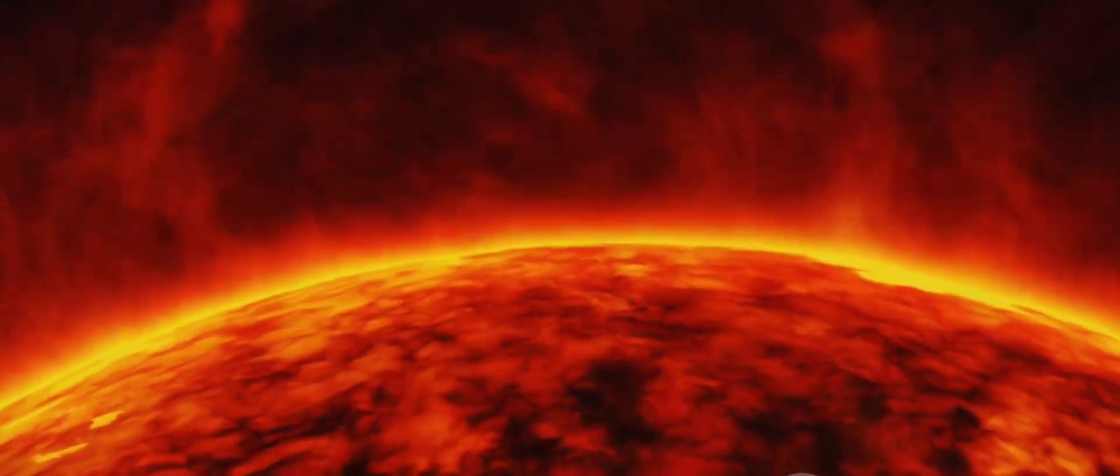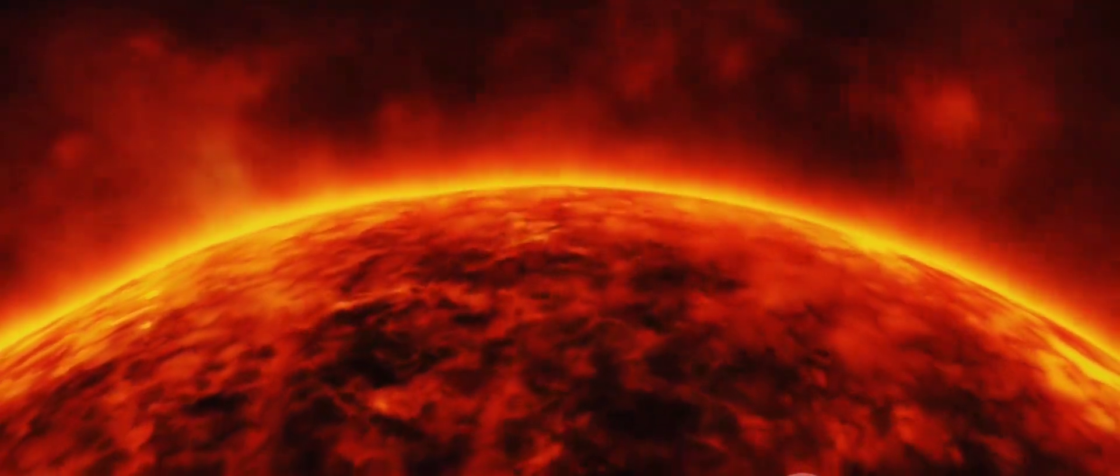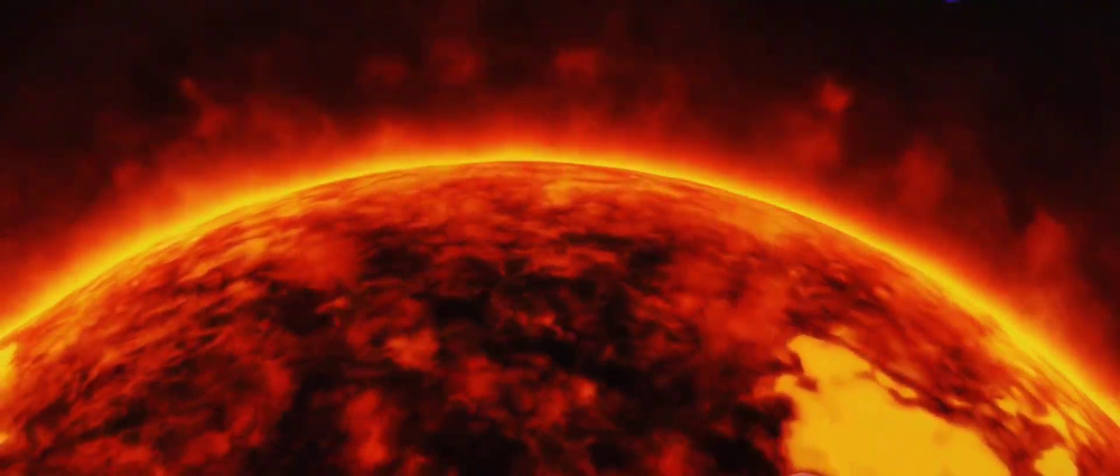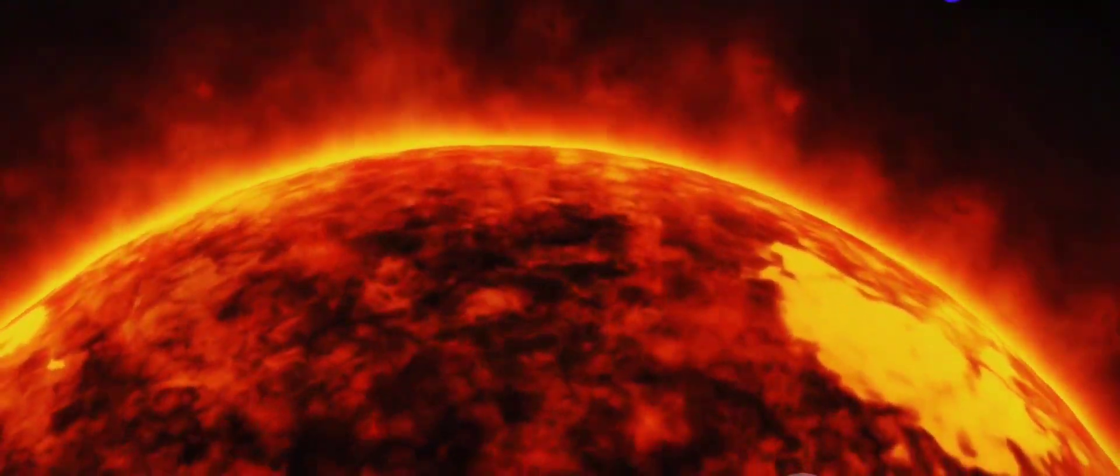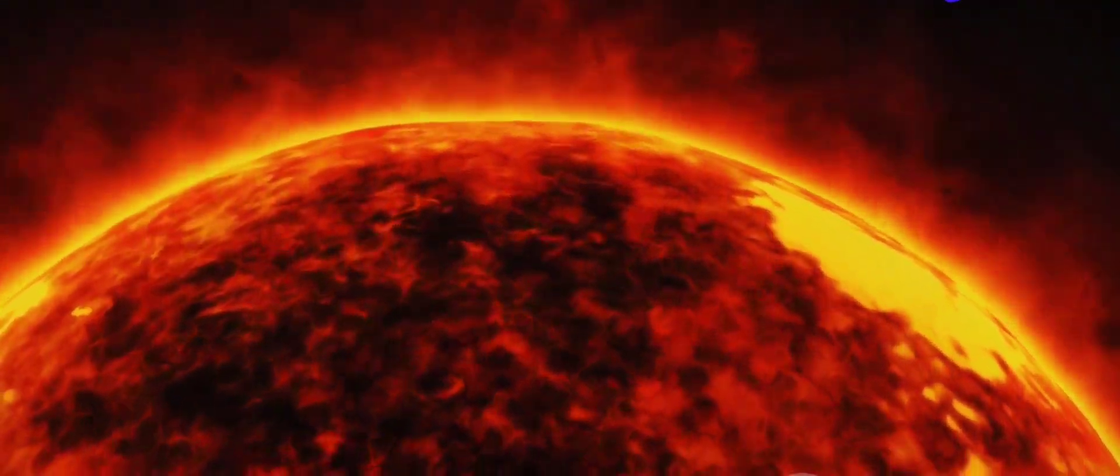The Sun's activity, which ebbs and flows in an 11-year cycle, plays a significant role in shaping the heliosphere's size and shape. During periods of high solar activity, when the Sun is unleashing powerful solar flares and coronal mass ejections, the heliosphere expands outward, pushing the heliopause further into interstellar space.